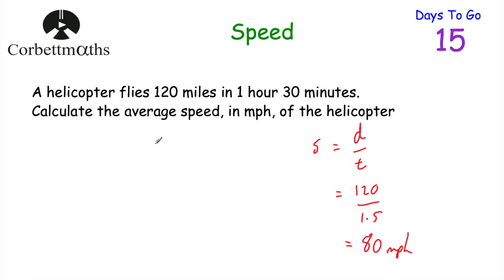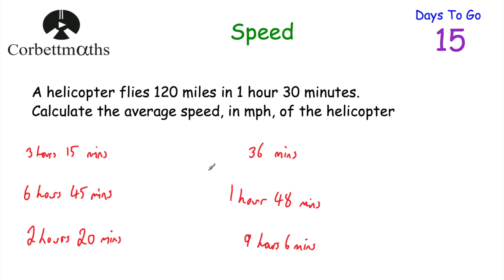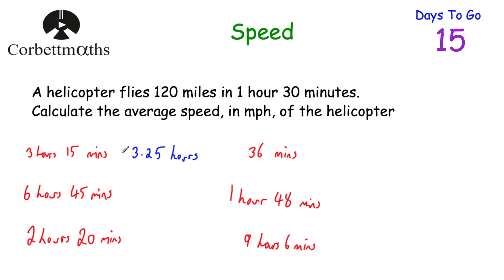Now I'm going to write some times here and change them into hours, just so we've got a bit of practice doing that. This question was quite nice because 1 hour 30 minutes is just 1.5 hours. So: 3 hours 15 minutes — 15 minutes is a quarter of an hour, so that's 0.25, giving 3.25 hours. And 6 hours 45 minutes — 45 minutes is three quarters of an hour, which is 0.75, so that's 6.75 hours.